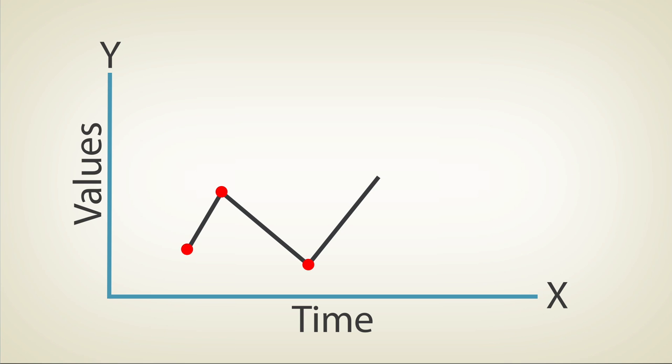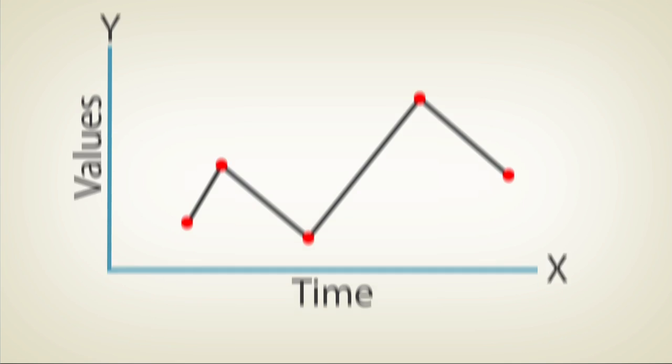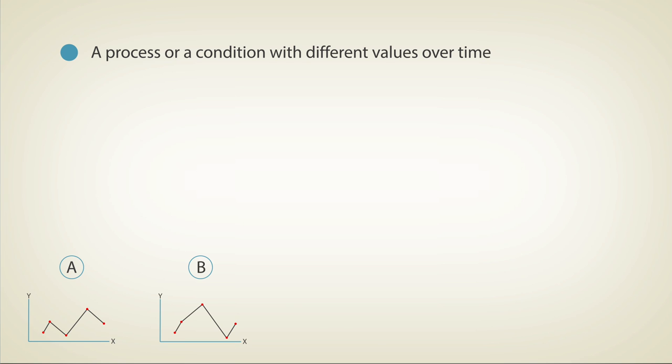The graph lines depict several values over time. Most graph questions on the Wonderlic test present information about a process or a condition, followed by five different images of graphs. Your task is to choose the graph that best matches the information described.